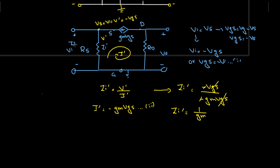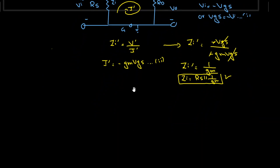So zi' is equal to v' divided by i', which is minus vgs divided by minus gm*vgs. The vgs terms and the minus signs cancel out, giving zi' equal to 1 over gm, which is one over transconductance. To find the overall input impedance, RS is in parallel with zi', so zi equals RS parallel with 1/gm. We have now found the input impedance without the effect of RD.